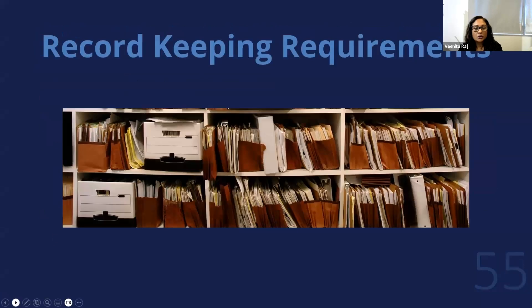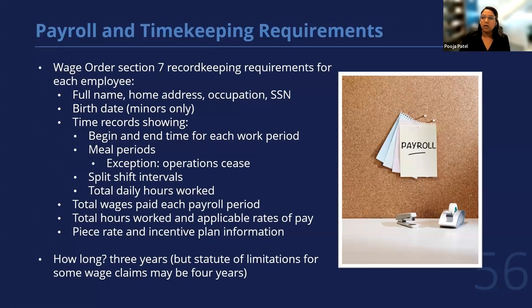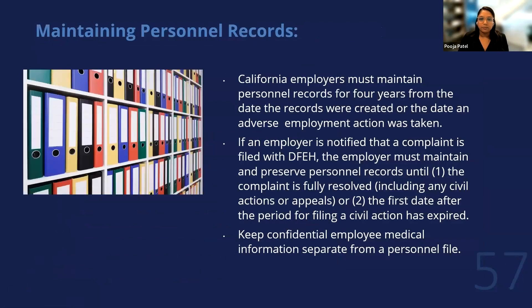Moving on to record keeping: Wage Order Section 7 has very specific requirements for payroll and timekeeping, and requires keeping these documents for three years. However, the statute of limitations for some wage claims goes back as far as four years, so we recommend keeping them a bit longer. California law requires employers to keep personnel records for four years from the date the records were created or the date an adverse employment action was taken. If notified of a complaint filed with the DFEH or the CRD, the employer must maintain personnel records until the complaint is fully resolved or the period for filing a civil action has expired.